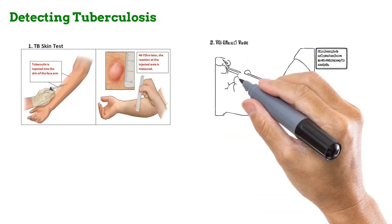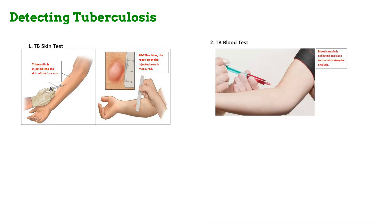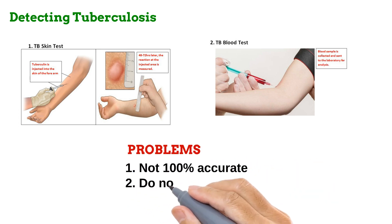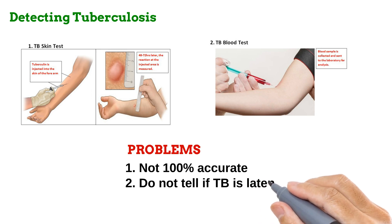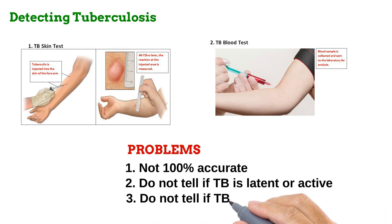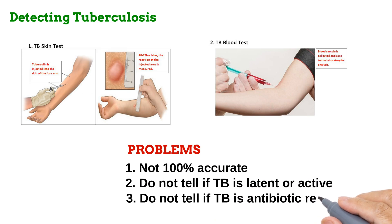Next is the Tuberculosis Blood Test, in which a sample of the patient's blood is collected and tested in the laboratory for the presence of Mycobacterium tuberculosis. These two methods have certain major problems. First, they are not completely accurate, with the skin test notorious for producing false positives in patients with BCG vaccination. Secondly, they do not tell if the tuberculosis is latent or active. Also, they do not tell if the tuberculosis present is an antibiotic-resistant strain.